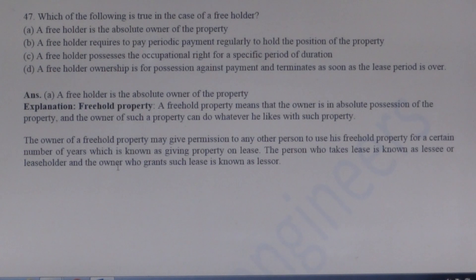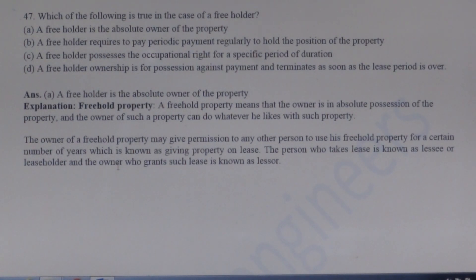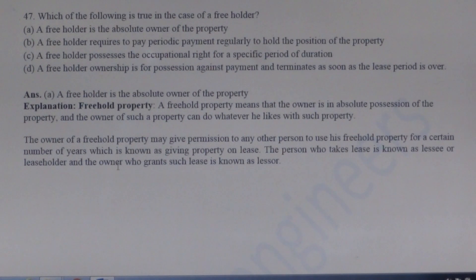Next question: Which of the following is true in the case of a freeholder? A freehold property means the owner is in absolute possession of the property and can do whatever he likes with it. The owner of a freehold property may give permission to any other person to use his property for a certain number of years, which is known as giving the property on lease. The person who takes the lease is known as a lessee or leaseholder, and the owner who grants the lease is known as the lessor.